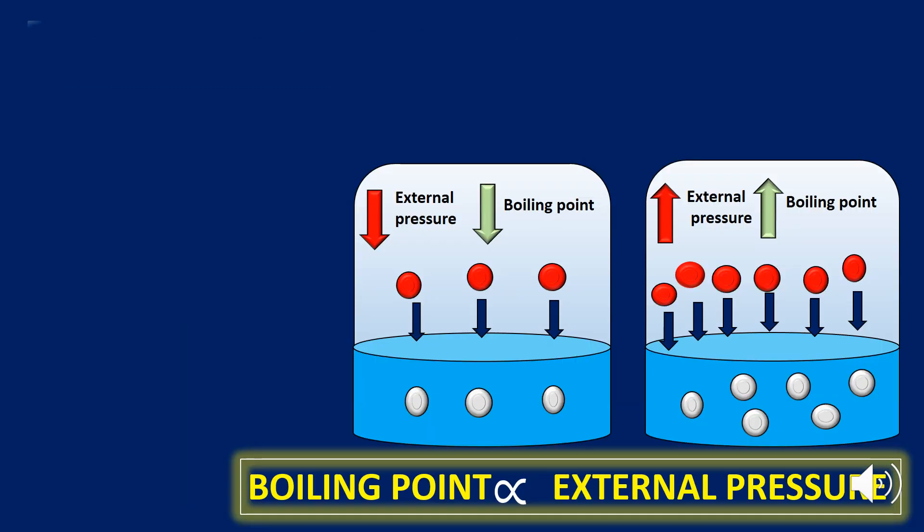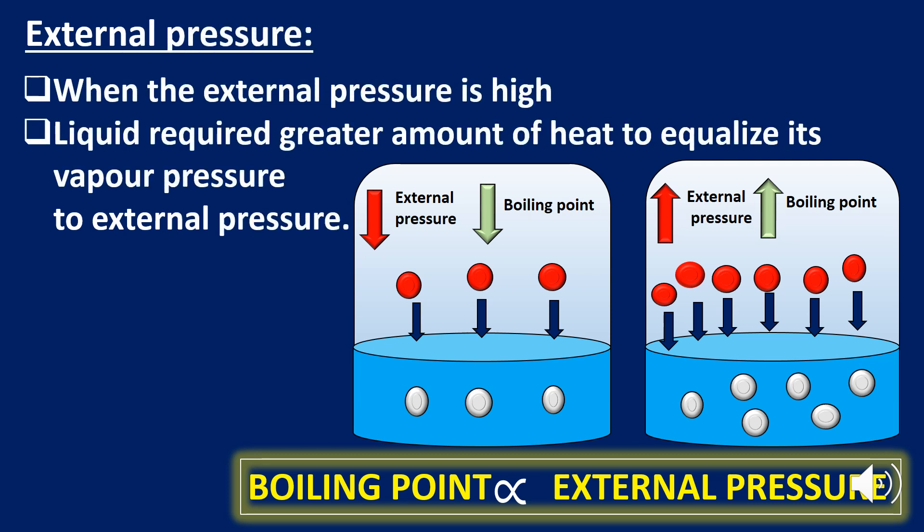The second factor that affects the boiling point of the liquid is the external pressure. A liquid boils when its vapor pressure becomes equal to the external pressure. Thus the boiling point depends upon the external pressure — the boiling point is directly proportional to the external pressure. With a decrease in external pressure, the boiling point decreases, and with an increase, it increases.